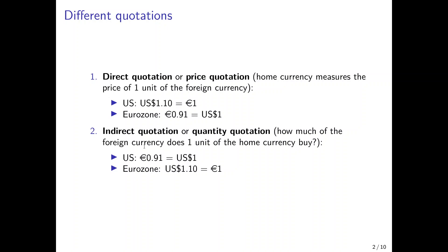The indirect quotation is actually the opposite. It asks how much of the foreign currency we can buy with one unit of the home currency. So from the perspective of the United States, we get how many euros we can buy with one US dollar. From the perspective of the eurozone, we get the US dollars we can buy with one euro. The indirect quotation is exactly the reverse of the direct quotation — buying one euro with one dollar and ten cents corresponds to the eurozone's indirect quotation of getting one dollar and ten cents for one euro.